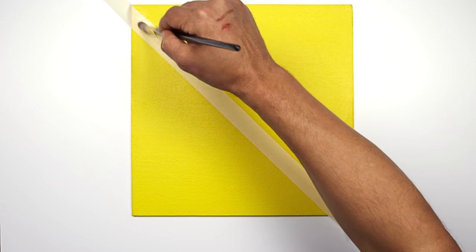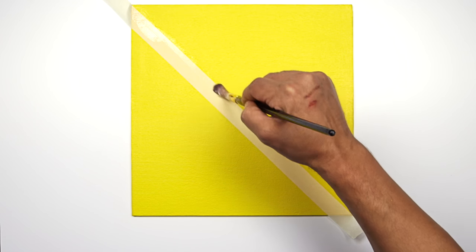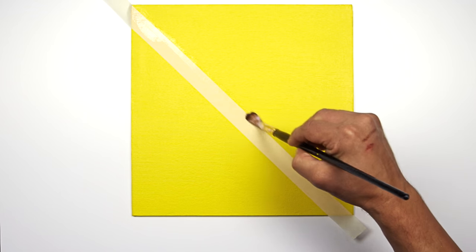To prevent paint bleed, you just want to apply a thin layer of Winston Newton matte medium all along the edge of the masking tape. Again, you don't want to add too much, but you just have to make sure that you don't miss any area of the masking tape.